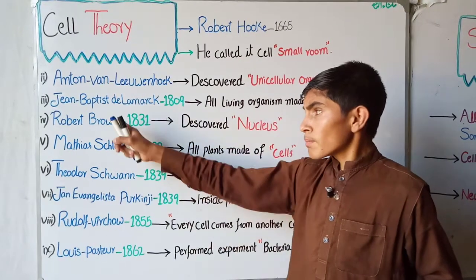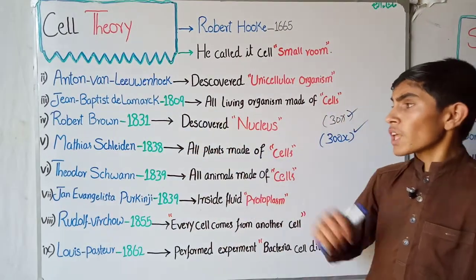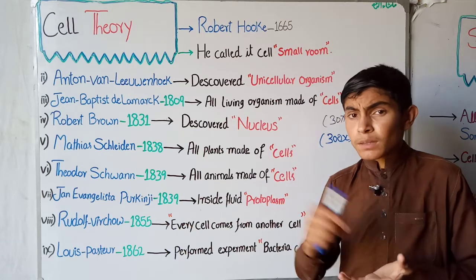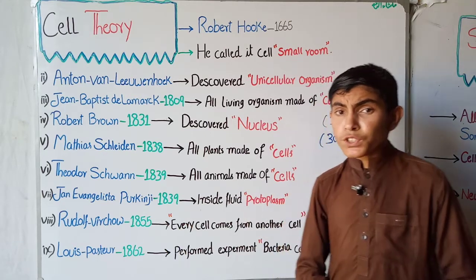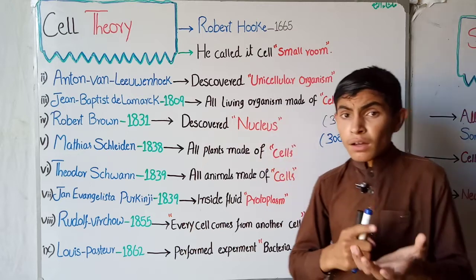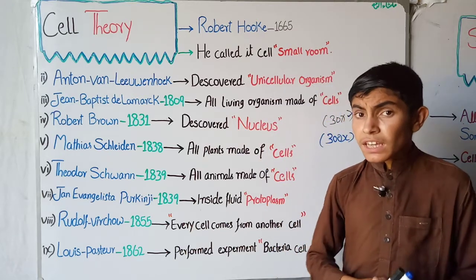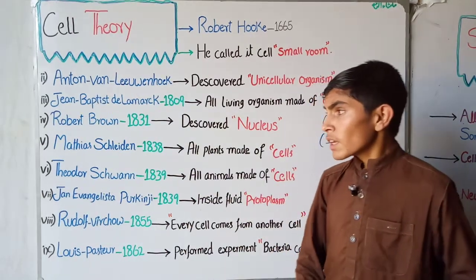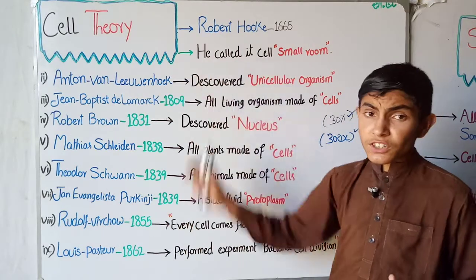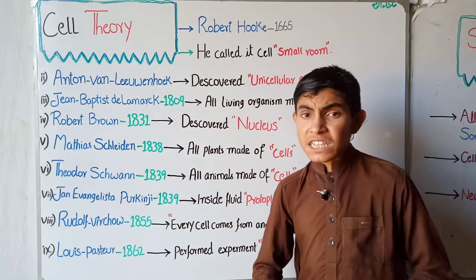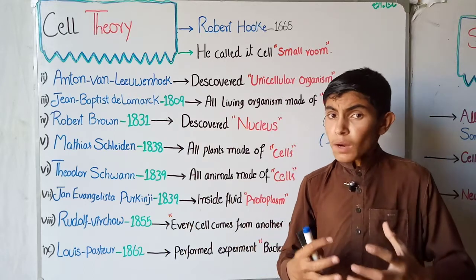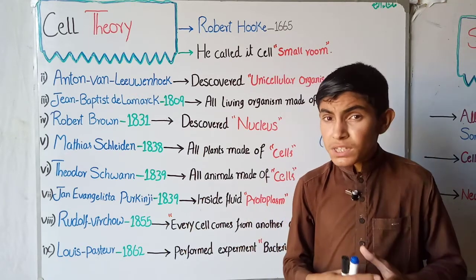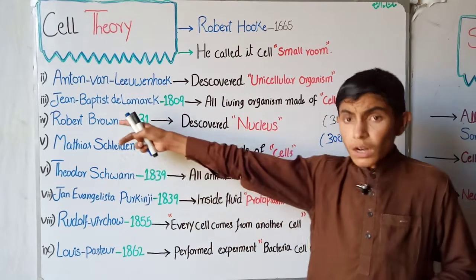After him, another scientist came — Jean-Baptiste de Lamarck, in 1809. He was a French scientist who studied both plant and animal bodies. He proposed that all living organisms, whether plant or animal, are made of cells. Up to this point there was only recognition of the cell itself, but no consideration of what was inside the cell — whether there were contents or arguments present inside or not.